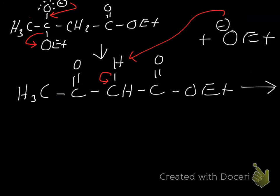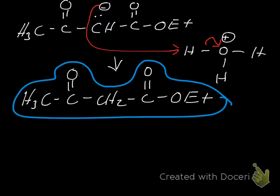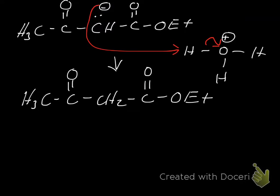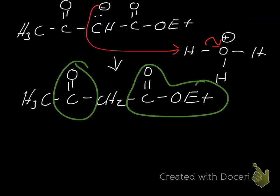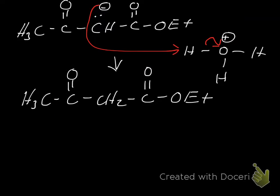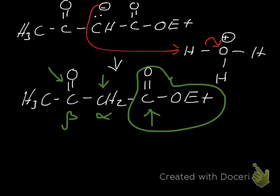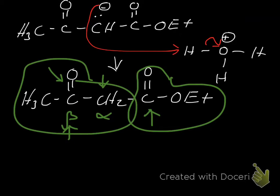Why do we call it a beta-keto ester? Here is the ester portion of the molecule, and we have a ketone. The carbon directly connected to the ester carbonyl carbon is the alpha carbon. The next carbon over is the beta carbon. It's a beta-keto ester because it's an ester and on the beta carbon we have a ketone.